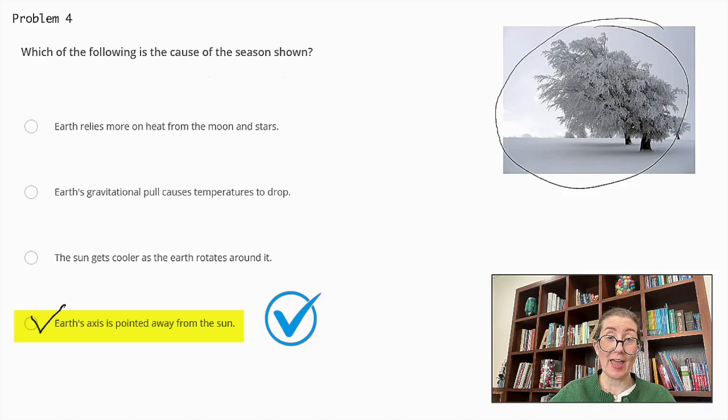Why are the other answers incorrect? From the top, the moon and the stars do not significantly contribute to the earth's heat. So that is not correct. Earth's gravitational pull does not affect seasonal temperature change. And the sun's temperature remains relatively constant. Seasonal changes are due to the tilt of the earth's axis, not the sun's temperature. Therefore, the correct cause of the season shown in the image is that the earth's axis is pointed away from the sun.